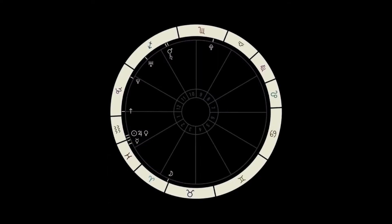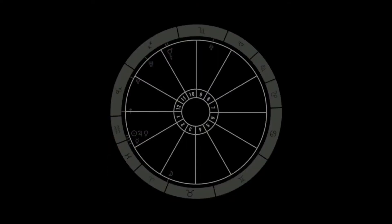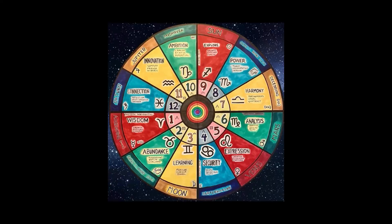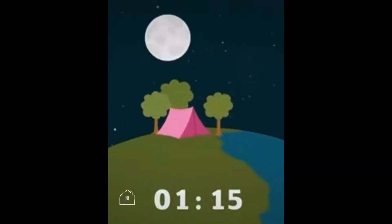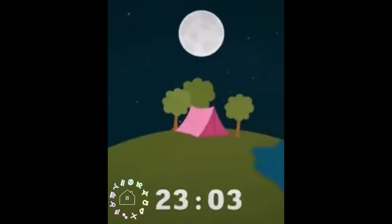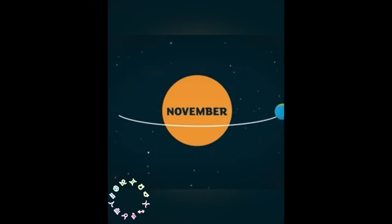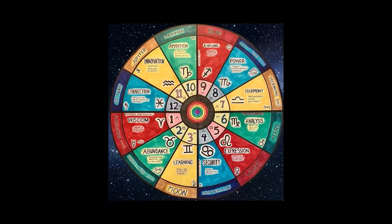Your birth chart is a 360-degree circle and it's divided into 12 sections called houses. The houses are based on the 24-hour Earth axis, unlike the signs which are based on the Sun's yearly rotation. The 12 sections represent specific parts of your life, and you start at the point of origin — where your rising sign or ascendant is — and that's the first house.